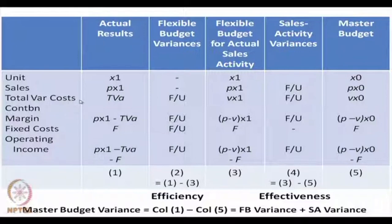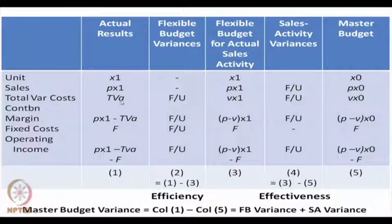Suppose the total variable cost initially was unit variable cost V multiplied by x₀, giving Vx₀. In the flexible budget it is Vx₁ — V is the unit variable cost — but the actual variable cost could differ; it could be TVA, total variable cost actual. Then we can compare between master budget and flexible budget, between actual and flexible budget, and also between master budget and actual results.